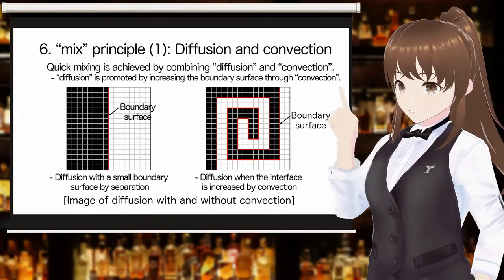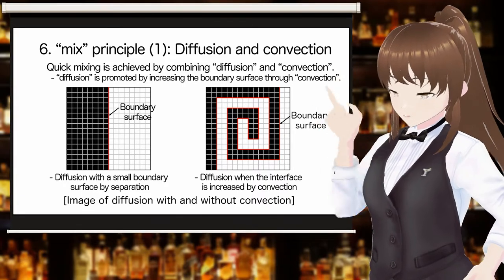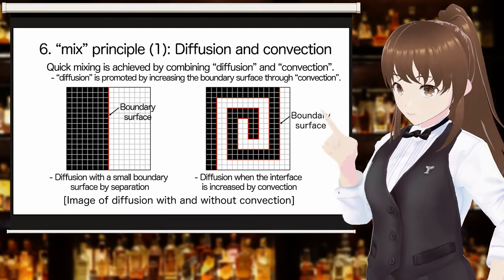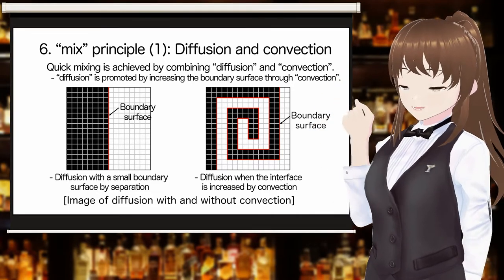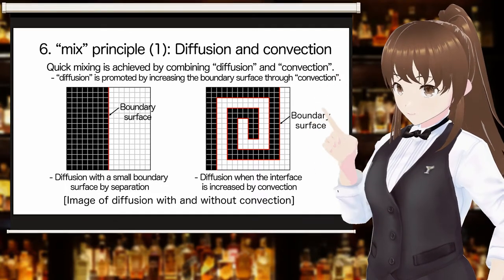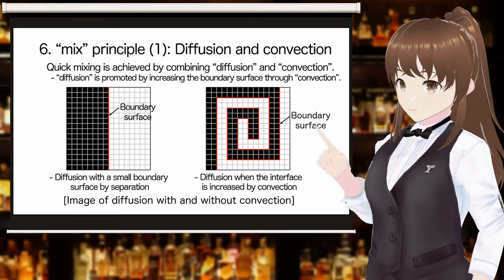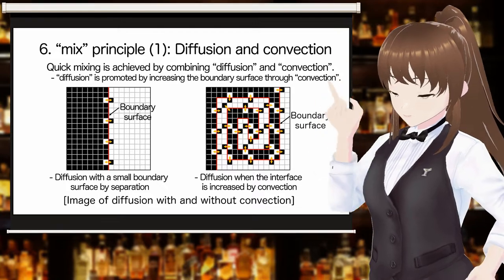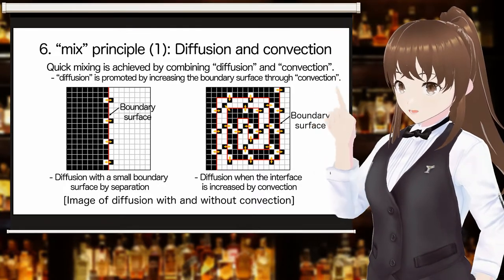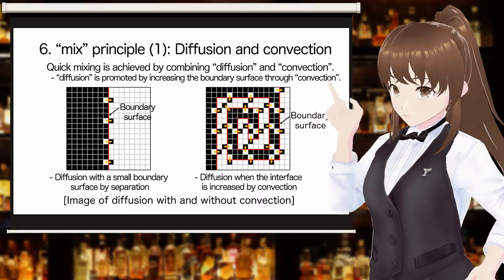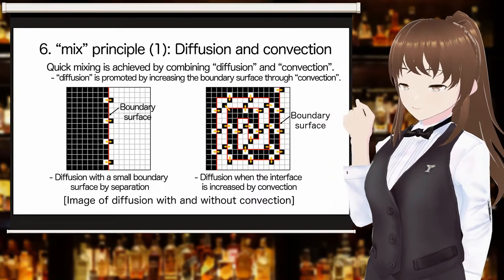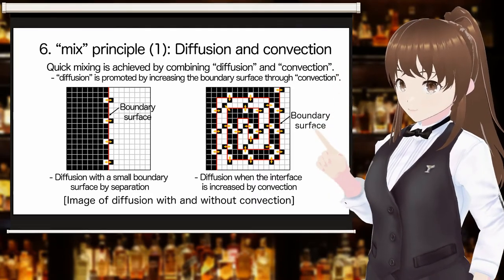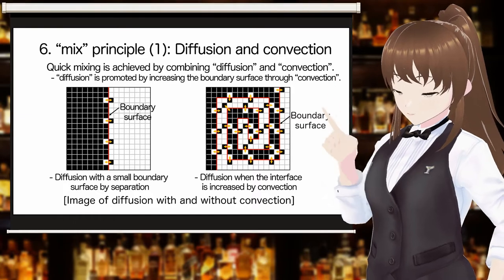Diffusion is the interchange at the molecular level at the interface between different materials. Convection stretches the mass of different materials by flow, thereby increasing the size of the boundary surface compared to the separated state. Convection increases the size of the boundary surface, which in turn increases the molecular-level interchange of different materials at that boundary surface due to diffusion. This is why convection is so important for mixing different materials quickly.